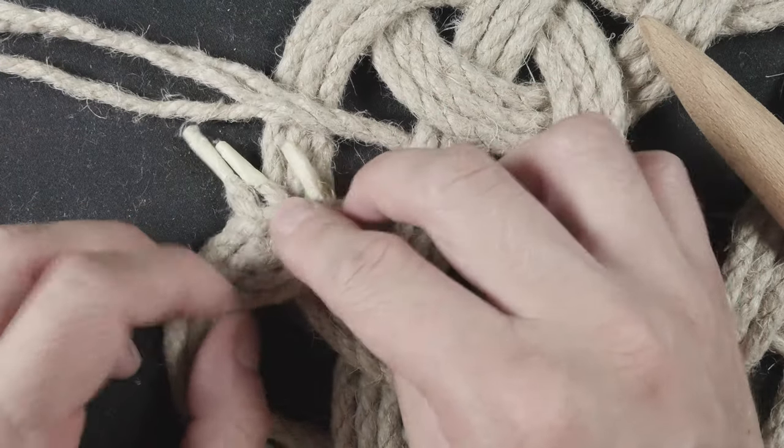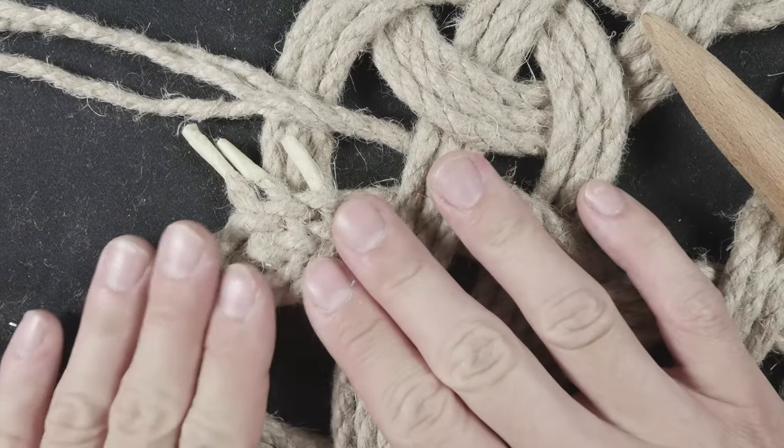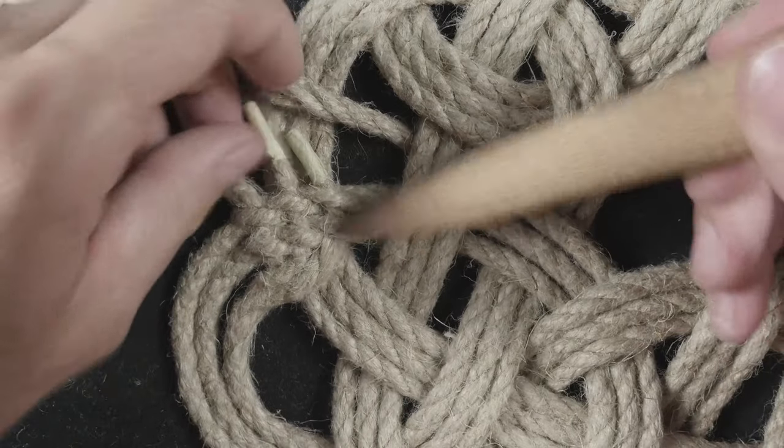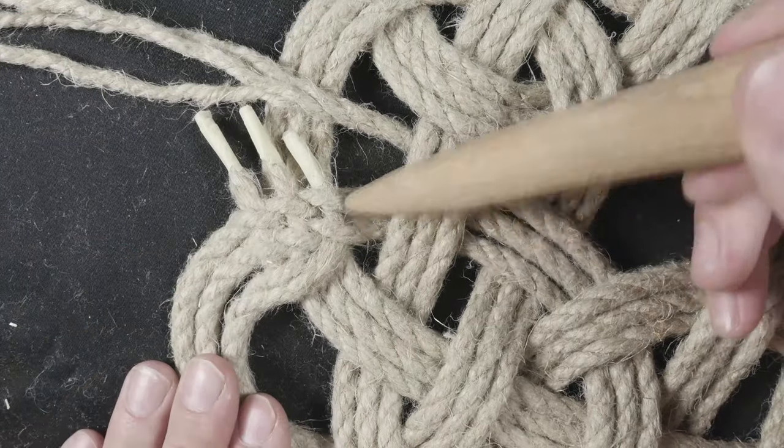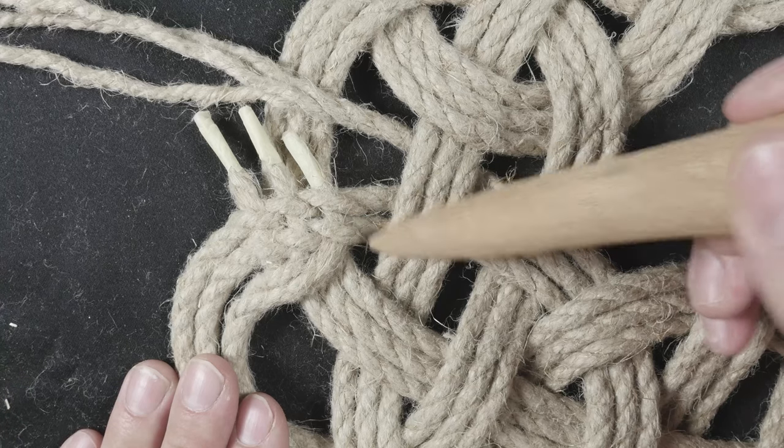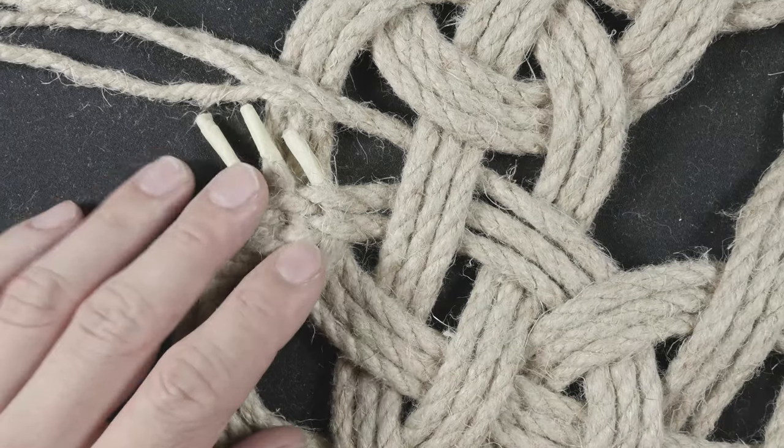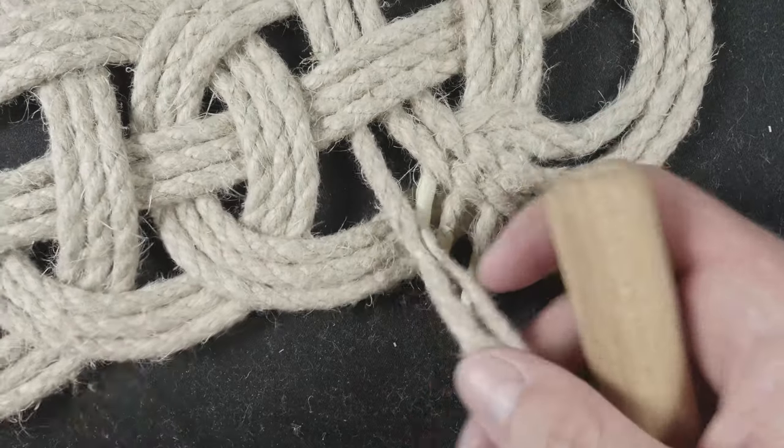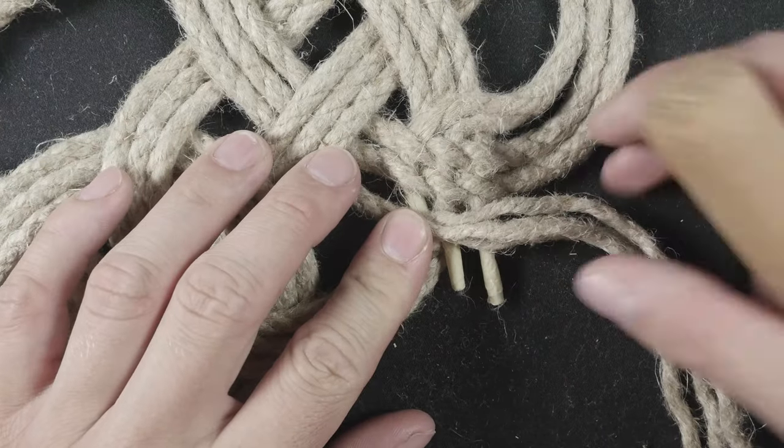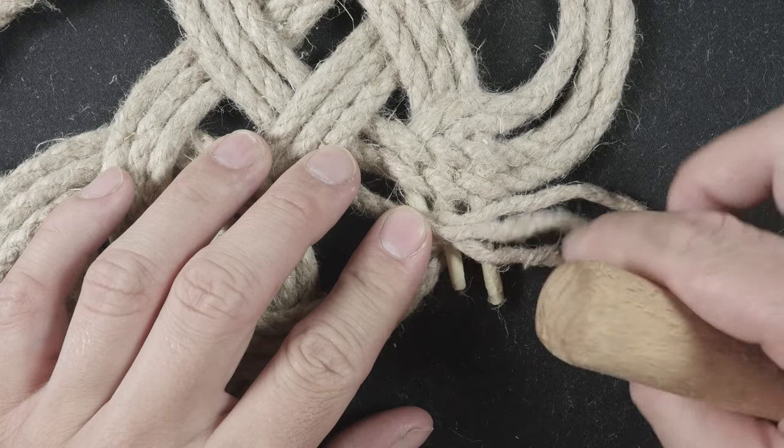This completes our work with one of the ends. The three strands are spliced through the two passes in the mat. Turn your mat around, like this, and we can begin our work with the remaining three strands.